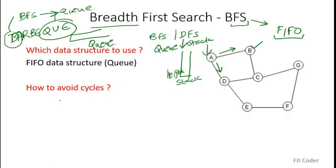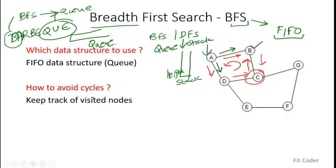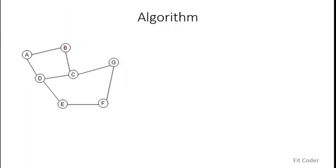The second important question is: how do we avoid cycles? Starting from A and exploring B and D, from D the adjacent node is C, but C is also adjacent to B, and there is a tendency to go back to B, creating a cycle. To avoid cycles during graph traversal, we keep an array or hash map to track visited nodes. These are the two key things to keep in mind when implementing BFS: use a queue and maintain a visited array.